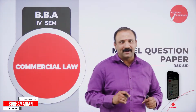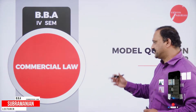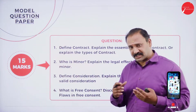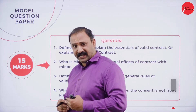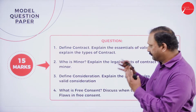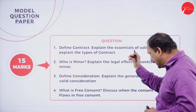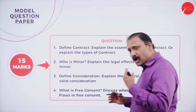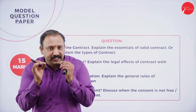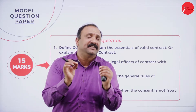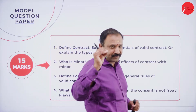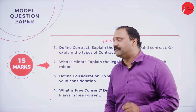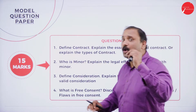Good morning and welcome to the model question paper solving in Commercial Law, fourth semester BBA. This is going to be a very interesting session where we discuss questions likely to come in your examination. Starting with the 15-mark questions, the first question is: define contract and explain the essentials of a valid contract. This is a mandatory and fundamental question in commercial law, repeated most of the time.